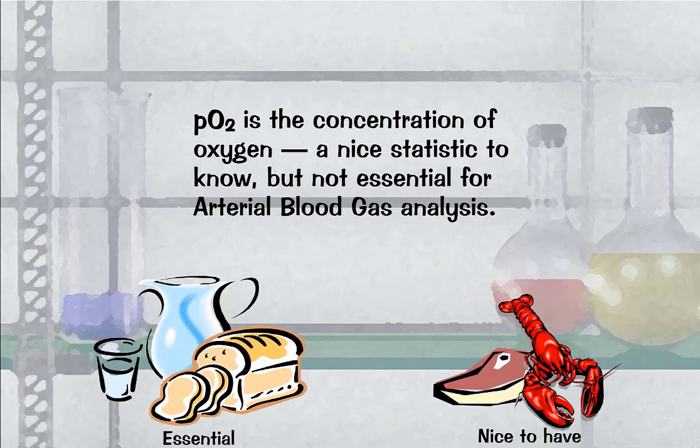PO2 is the concentration of oxygen. A nice stat to know, but not essential for arterial blood gas analysis.